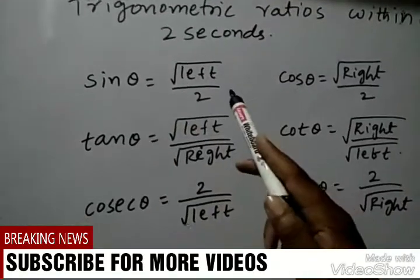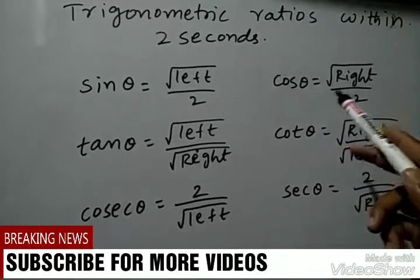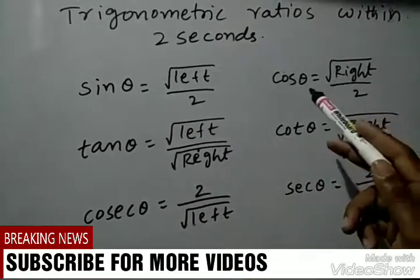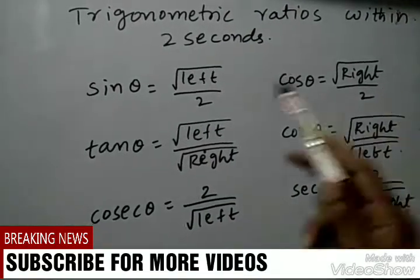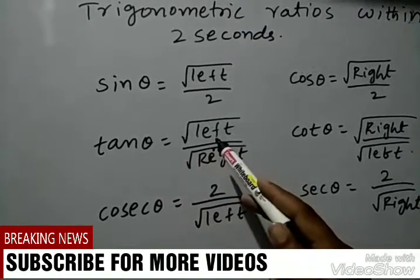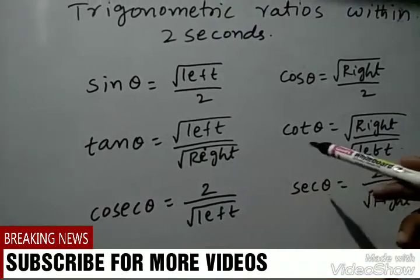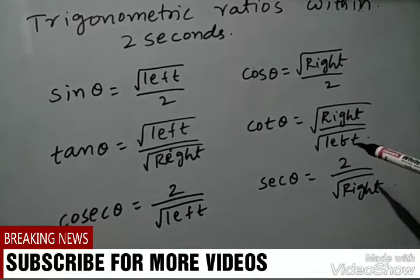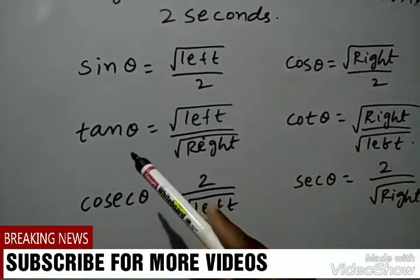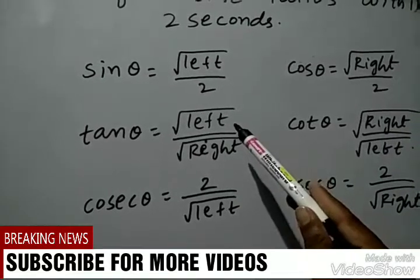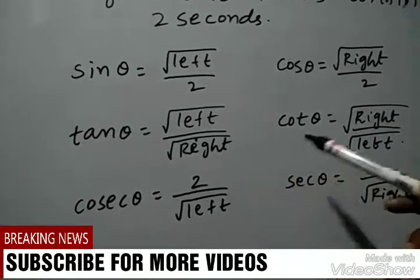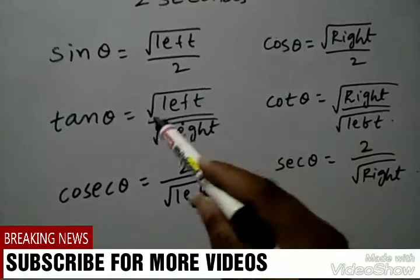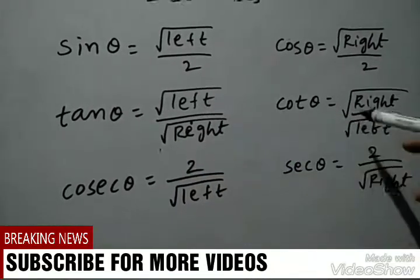Sin theta is equal to root left by 2, cos theta is equal to root right by 2. Tan theta is equal to square root of left by square root of right, cot theta is equal to square root of right by square root of left. Otherwise, we can take only one root.